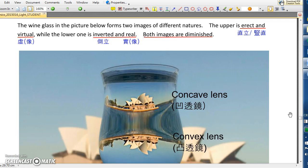The wine glass forms two different images. One is erect and virtual, the other inverted and real.